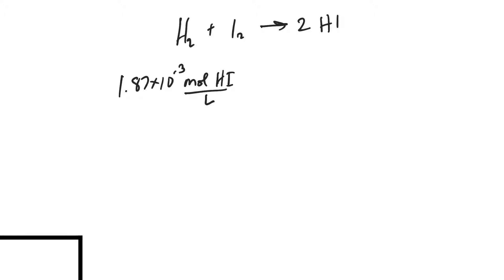Okay, so in 2 moles of HI, so I'll put that on the bottom, of 2 moles of HI, I've got 1 mole of H2. Okay, so when I do the cancellations, I get 0.935 times 10 to the negative 3, and this is the new concentration, so this is the moles of H2 over liters, and that's the number we'll put in the ICE table under hydrogen.